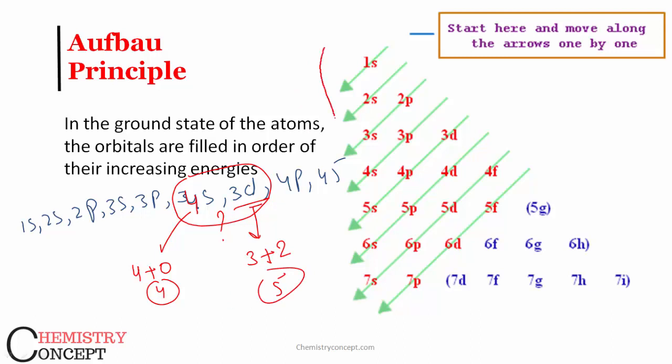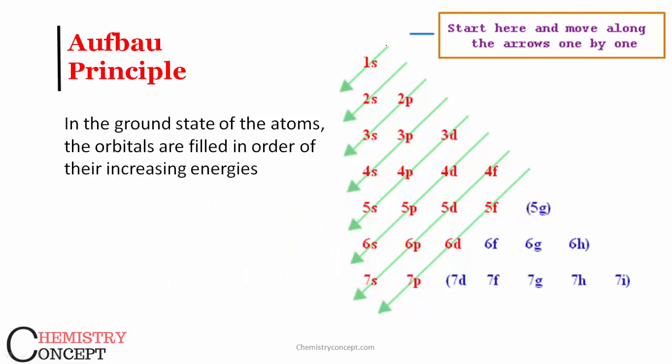Now, sometimes you may find it difficult to remember the sequence. So there is a trick. Here is the trick. Just arrange the orbitals in these segments: 1s, 2s, 3s, 4s, 5s, 6s, 7s.